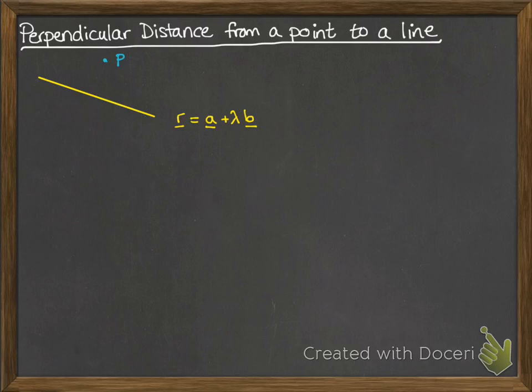And for us to be able to work that out, we need the perpendicular distance, so the shortest distance there. We're going to call that point that we've just marked up N. And this means that since the vector NP crosses the line at right angles, the scalar product between the vector and the direction of the line would give us 0. We're going to use that to help us find that vector NP and its length.